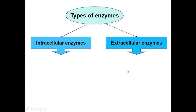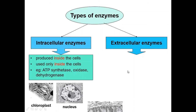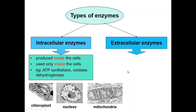Intracellular enzymes are synthesized inside the cell and used only within the cell. For example, ATP synthetase, oxidase, and dehydrogenase. These enzymes can be easily found in the chloroplast, nucleus, mitochondria, and cytoplasm.